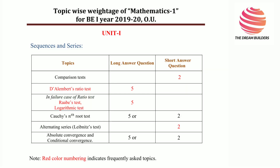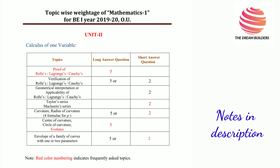Let's go through the Weightage for Sequence and Series Unit 1 Chapter. Comparison Test will be asked for Short Answer Question 2 Marks, D'Alembert's Ratio Test for 5 Marks, Raabe's Logarithmic Test for 5 Marks, Cauchy's Integral Test for 5 Marks or even for 2 Marks. Give more importance to 5 Marks questions — Long Answer Questions.